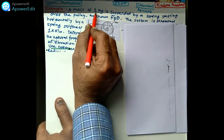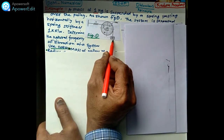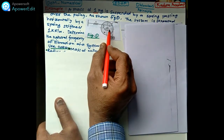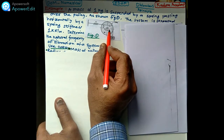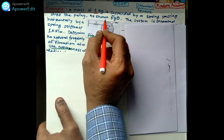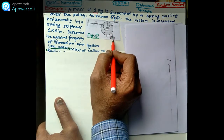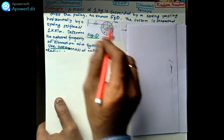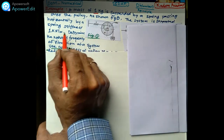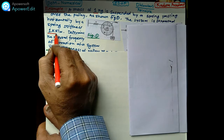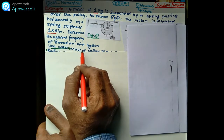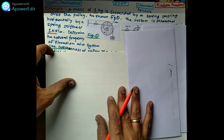What is given to you? A mass of 1 kg is suspended by a string passing over a pulley as shown in the figure. The system is supported horizontally by a spring of stiffness K = 1 kg per meter. We have to determine the natural frequency of vibration of the system.